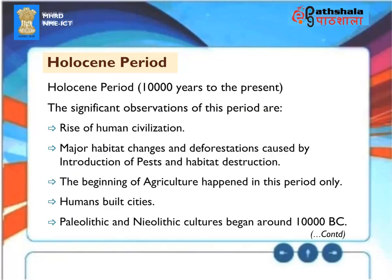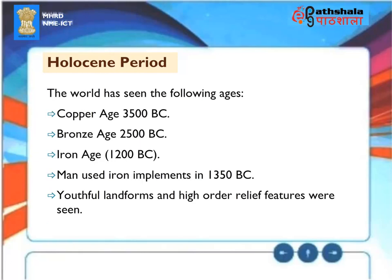The Holocene period (10,000 years to the present): rise of human civilization, major habitat changes and deforestation by introduction of pests and habitat destruction, beginning of agriculture. Only humans built cities. Paleolithic and Neolithic cultures began around 10,000 BC. The world saw the following ages: Copper Age (3500 BC), Bronze Age (2500 BC), Iron Age (1200 BC) — man used iron implements in 1350 BC. Youthful landforms and high-order relief features were seen.